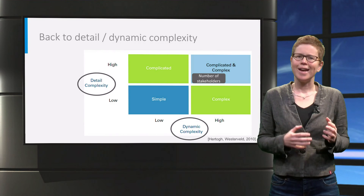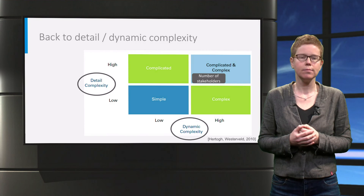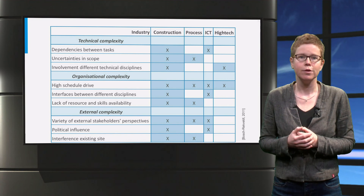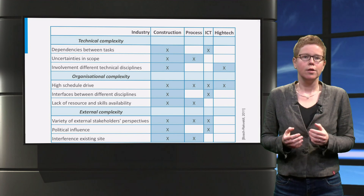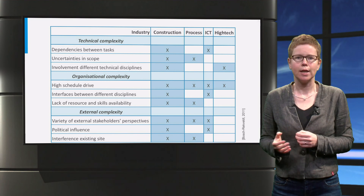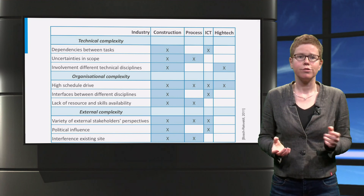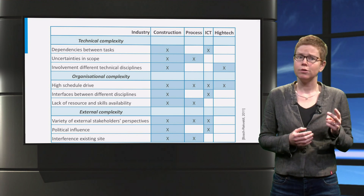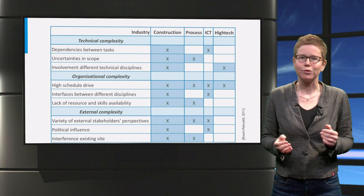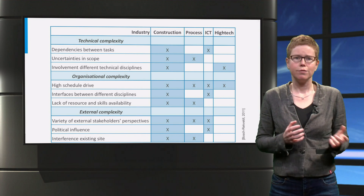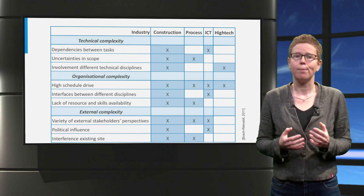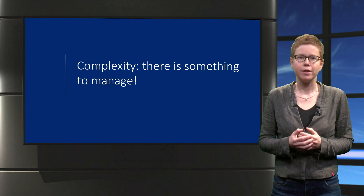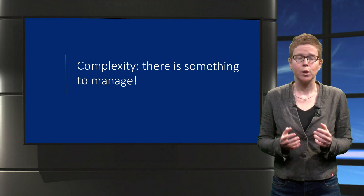Let's look at some research results to see if any complexity elements seem more prominent than others. In various researches across process industry, construction industry, ICT, and high-tech product development, we investigated complexity faced in contemporary projects. We found several similarities in the top lists of complexity-causing elements. A high project schedule drive was mentioned in all sectors, and variety of external stakeholder perspectives in all sectors but high-tech. Several elements appeared in two sectors: uncertainties in scope, dependencies between tasks, involvement of different disciplines, lack of resources and available skills, interfaces between disciplines, interference with existing projects, and political influence. Quite a few of these elements were shown to have a direct relation to project performance — so there is something to win when we are able to recognize them early in the project and learn ways to deal with them.